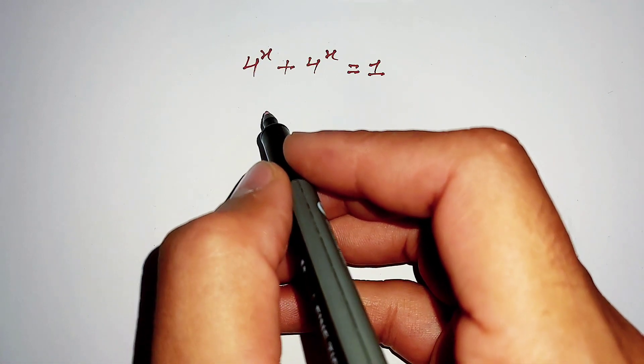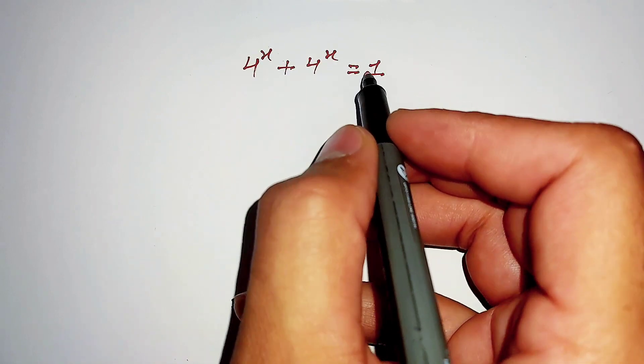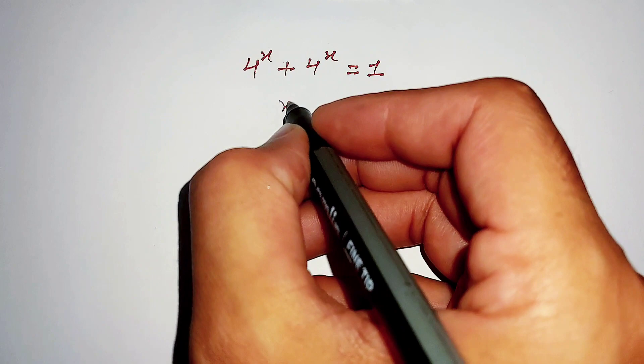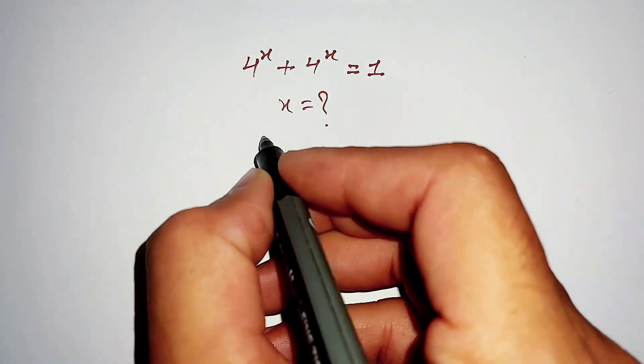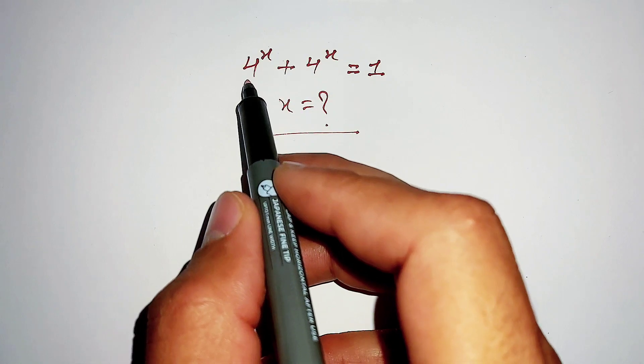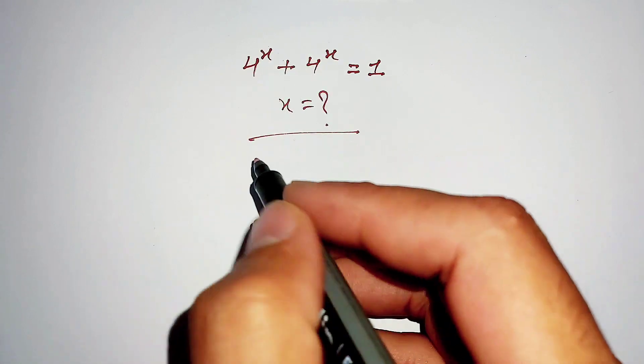Hello, here the question is 4^x + 4^x = 1 and we have to find the value of x. First of all, we will take out 4^x as a common term from these two terms.